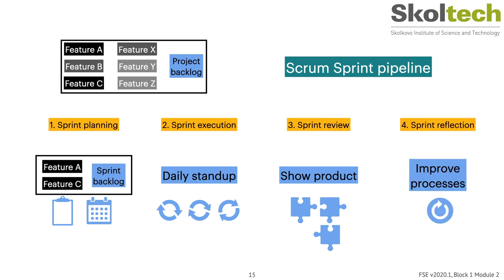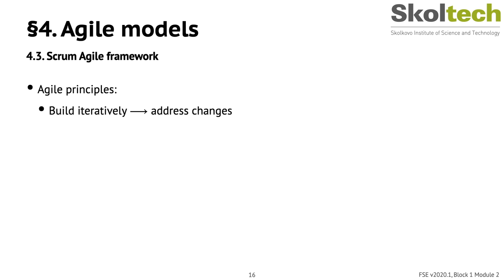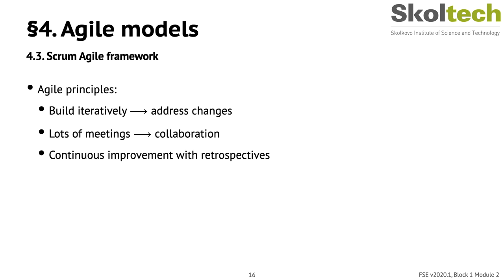Finished work accumulates over time into a more complete solution. An internal meeting called the sprint retrospective also occurs, where the team talks about the process and how they can be more effective, productive, or obtain more satisfaction from their work. You can see how Scrum contributes to implementing agile principles: by building iteratively, the team addresses changes in requirements and customer needs. Lots of meetings facilitate collaboration between team members, the Product Owner, and the Scrum Master. The framework encourages continuous improvement through retrospective meetings.